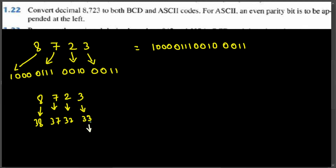The first three bits for each code will be 011, because the upper digit is 3 in hex, which is 011 in binary. The lower four bits come from the BCD representation of each digit — 0011 for 3, 0010 for 2, etc. So we prepend 011 in front of each BCD value to form the seven-bit ASCII code.